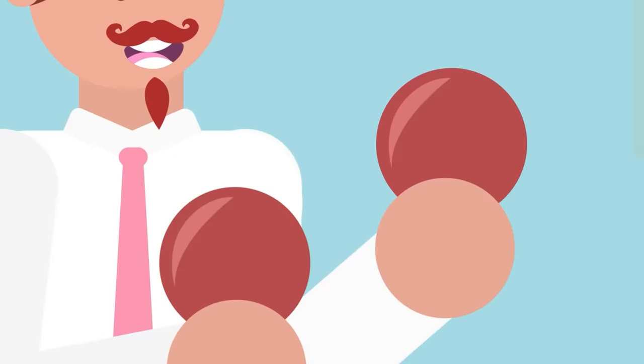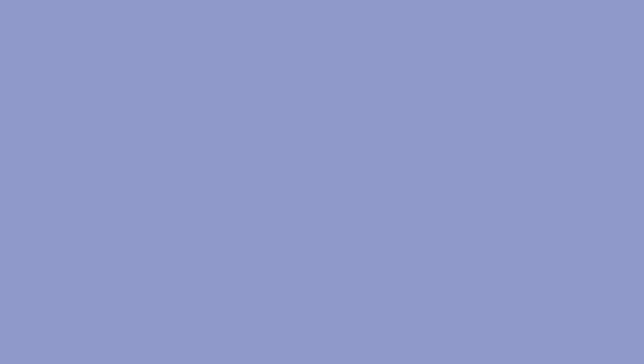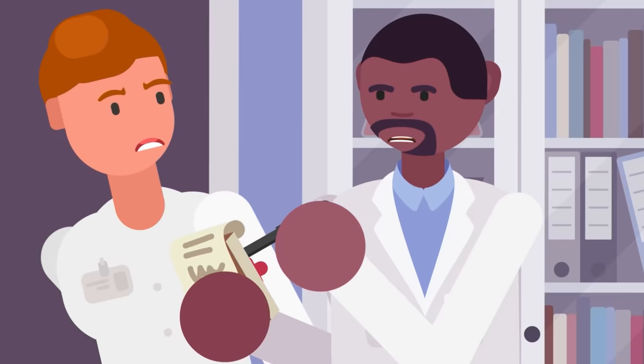For most males, the left testicle hangs a little lower than the right. The reason for this is so the temperature of one testicle can be adjusted without affecting the other. If both testes were at the exact same height, they would be constantly touching one another, and there would be no way to make slight temperature adjustments to either side without affecting the other. Scientists have no idea why it is the left testicle that hangs lower for most males. It may be by random chance or a yet-to-be-discovered reason that will be just another weird fact to add to the list.